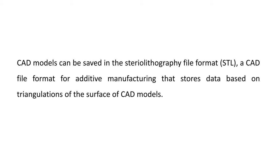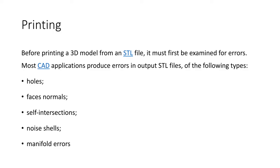The next step is printing. Before printing a 3D model from an STL file, it must be examined for errors, because the CAD file may have errors like holes, face normals, and self-intersections. These errors have to be repaired first.